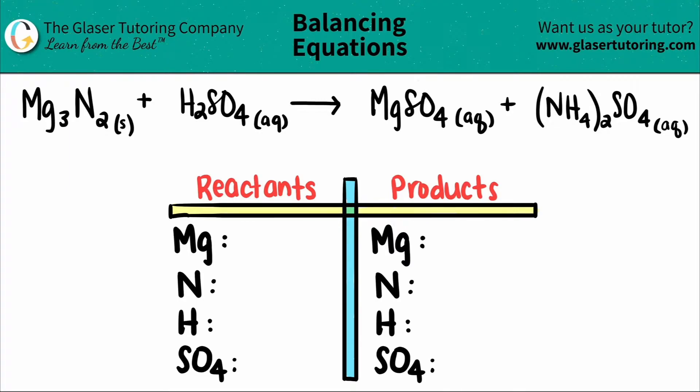Today we are going to be balancing the reaction of Mg3N2 plus H2SO4, sulfuric acid, and that will produce or yield magnesium sulfate, which is MgSO4, plus ammonium sulfate, which is (NH4)2SO4.